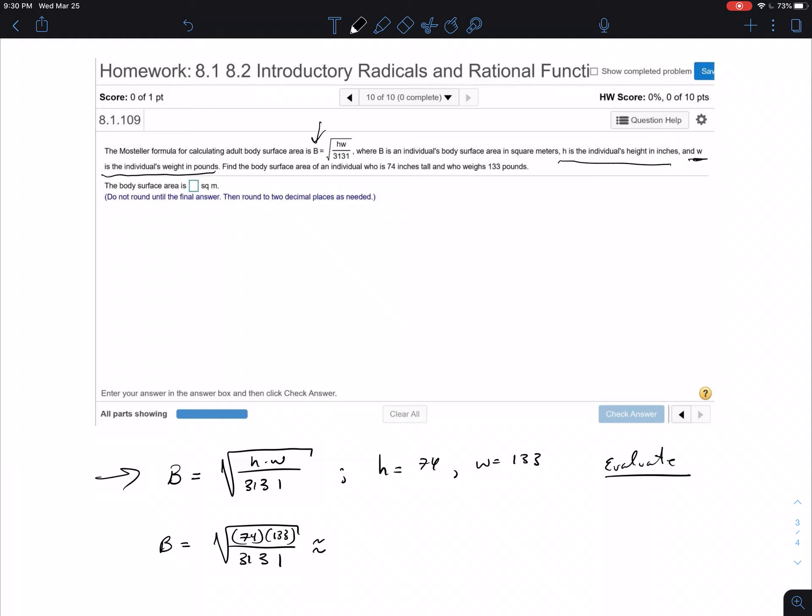The only thing you have to do is evaluate. So that was it. So I substituted, right? I shouldn't write right there. That's not too good. But all I'm doing is substituting the values of 74 and 133 for h and w, respectively. And you can see that here.